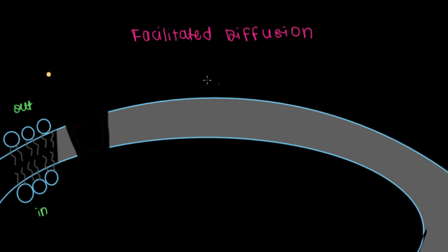So along our cell membrane, there are also going to be proteins that are embedded along the cell membrane. And so what's going to facilitate the movement of this chloride ion across from the outside to the inside is this chloride channel right here.